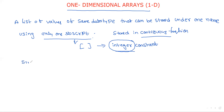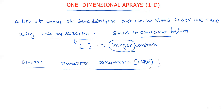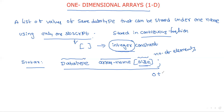The syntax is: data type, followed by array name with the subscript containing the size. Data type specifies the type of elements stored. Array name is any user-defined name. Size specifies the maximum number of elements that can be stored. The indexes are represented from zero to size minus one.